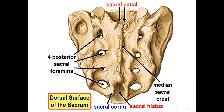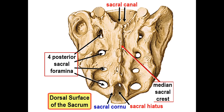On the back of the sacrum, we have the posterior sacral foramina. In the midline, we have the median sacral crest. At the lower end of the sacrum, there is a hiatus called the sacral hiatus, and here is the sacral canal.